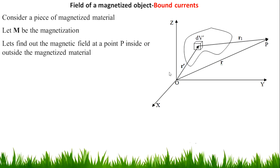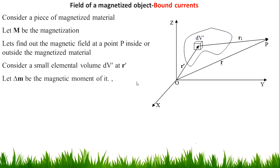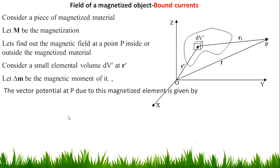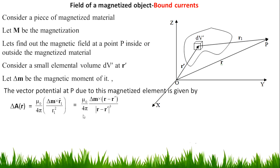The dv dash is placed at r dash. Consider a small element dv dash at r dash. Let delta M be the magnetic moment of it. So we are considering a small volume dv dash, and delta M is the magnetic moment of this small volume element. The vector potential at P due to this magnetized element is given by: delta A of r equals mu zero over 4 pi, delta M cross r1 cap divided by r1 squared.